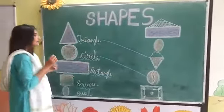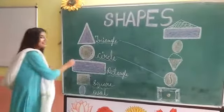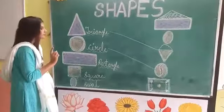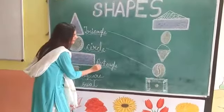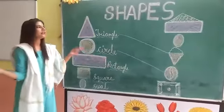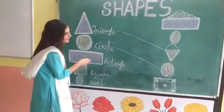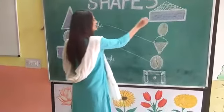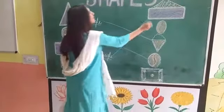Now students, tell me which shape is this? This is a rectangle. Yes, this is a rectangle. And students, what is the spelling of rectangle? Let's spell. R-E-C-T-A-N-G-L-E. Rectangle. And students, which figure is similar to this rectangle? Heart. Yes, heart is similar to this rectangle. So let's match. Very good.